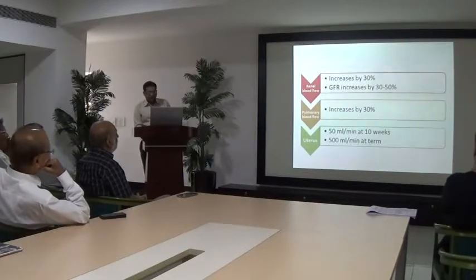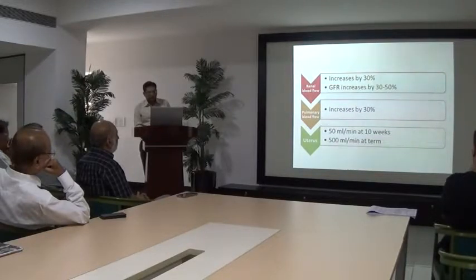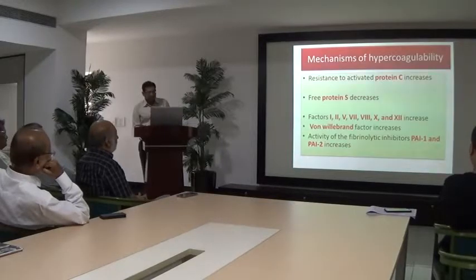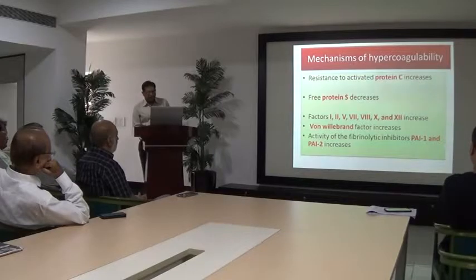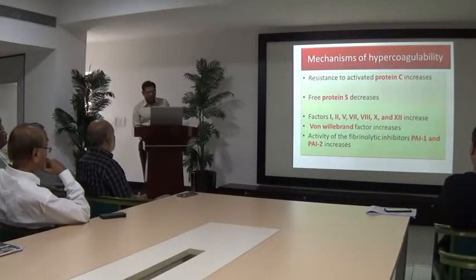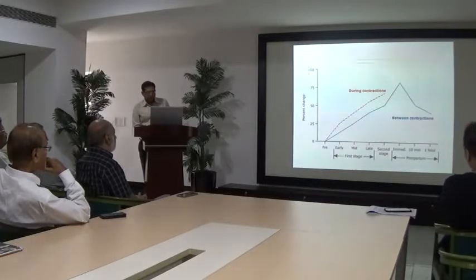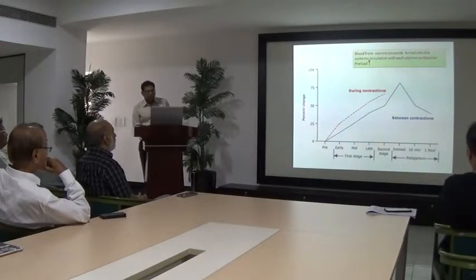Renal blood flow increases by 30%, GFR increases by 30–50%, pulmonary blood flow increases by 30%, and uterine blood flow increases. Coagulation factors 1, 2, 5, 7, 8, 10, and 12 increase, along with more preliminary sector increases and activity of fibrinogen and inhibitors. Regarding network changes, blood flow from uterine sinusoids returns to systemic circulation with each uterine contraction — this is referred to as auto-transfusion occurring during pregnancy.